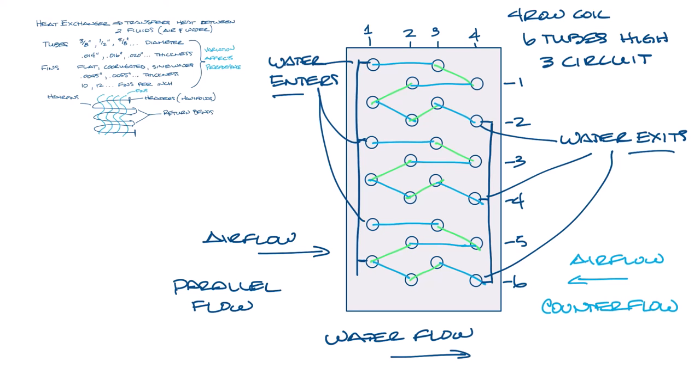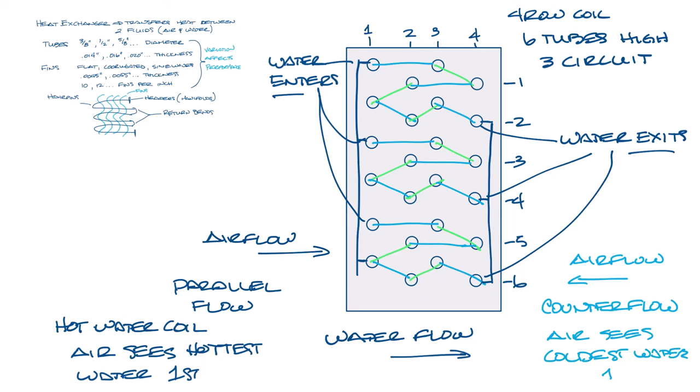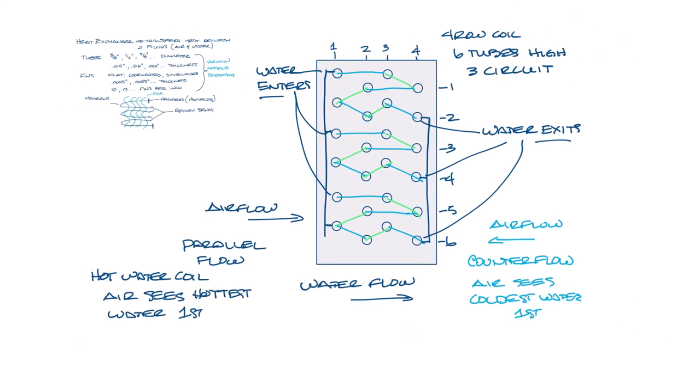So let's say this is a hot water coil. If the air flow is going left to right, and it's a parallel flow coil, the air would see the hottest water first. If this was used as a counter flow coil, the air would see the coldest water first.